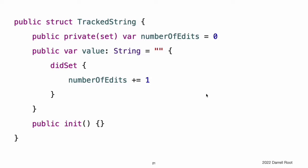This example shows a version of the tracked string structure in which the structure is defined with an explicit access level of public. The structure's members, including the number of edits property, therefore have an internal access level by default. You can make the structure's number of edits property getter public and its property setter private by combining the public and private(set) access level modifiers.